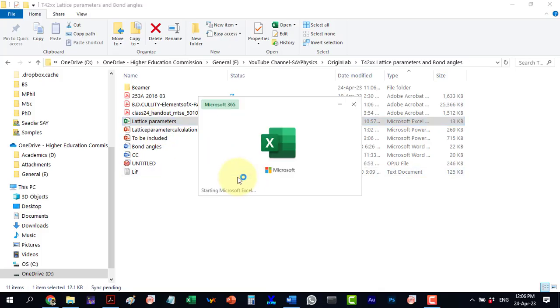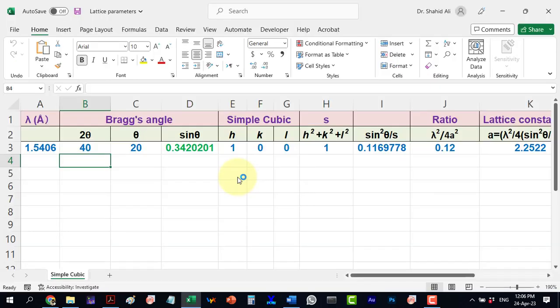As we have found the peaks positions, now go to the Excel template, in which we will do the calculations as discussed earlier in this tutorial. Please note that a link to this Excel calculation template will be provided for download in the video description. Here, this is the X-ray wavelength and here we will put the 2θ values as we found here.